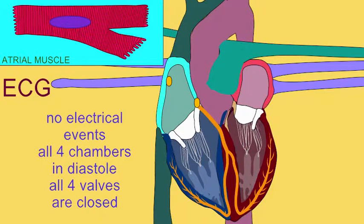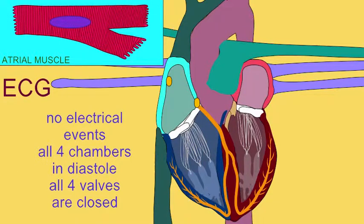When a new cardiac cycle begins, there are no new electrical events, all four chambers are in diastole, and all four valves are closed.